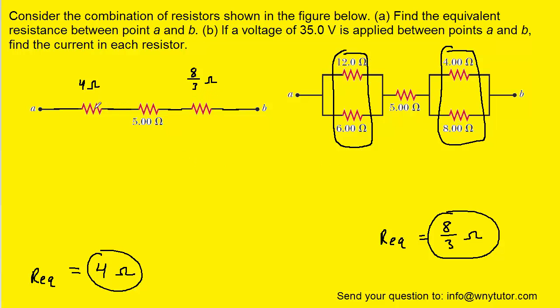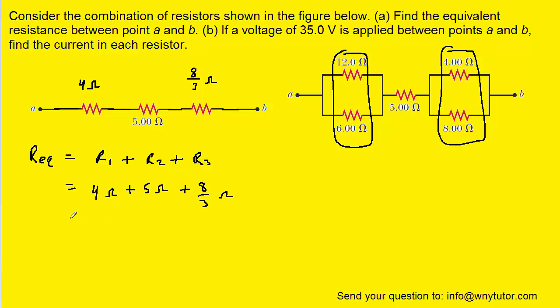Now that we have these three resistors situated in a row, we can see that they are in fact in series with one another, and we use the following equation for series resistors. All we have to do is add together the three individual resistances to get the overall resistance. We'll plug in the 4 ohms for R1, 5 ohms for R2, and 8 thirds ohms for R3. When we add those together on our calculators, we get approximately 35 thirds ohms. This would be the correct answer to part A.